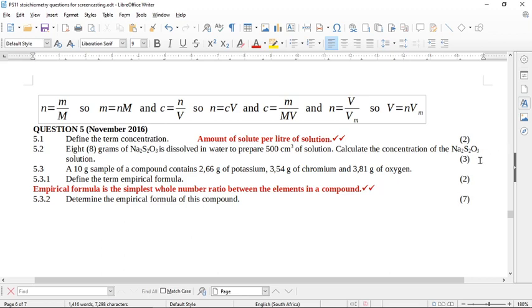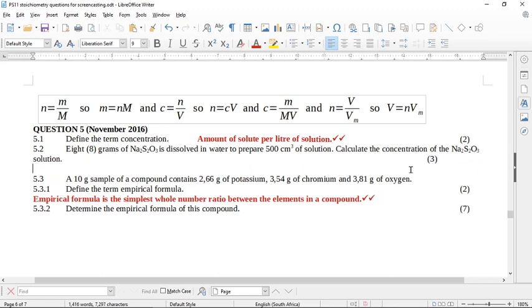Now, let's have a look at the questions here. Eight grams of Na2S2O3, this is sodium thiosulfate, is dissolved in water to prepare 500 cubic centimeters of solution. Calculate the concentration of the sodium thiosulfate solution.